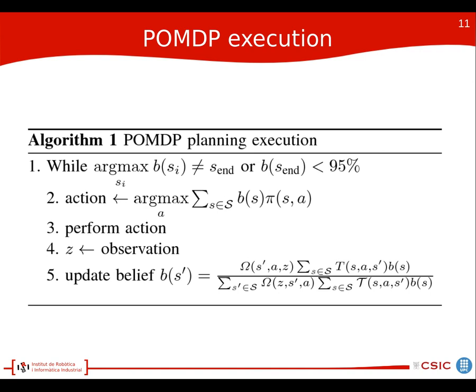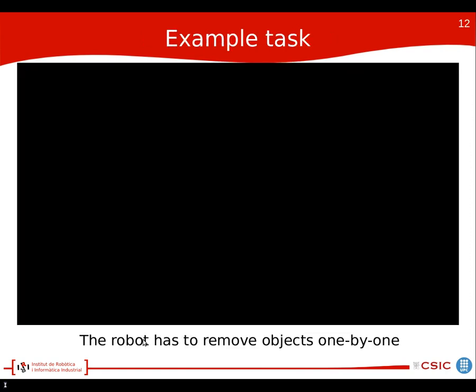During POMDP execution, the algorithm runs by obtaining the best action given a probability distribution over states. Given a belief, we combine it with the policy computed by the solver and obtain the action that maximizes the long-term reward. After performing the action, we retrieve an observation that allows the robot to update the probability distribution over states. This continues until we reach with greater than 95% certainty that we've reached the last state — the empty table.